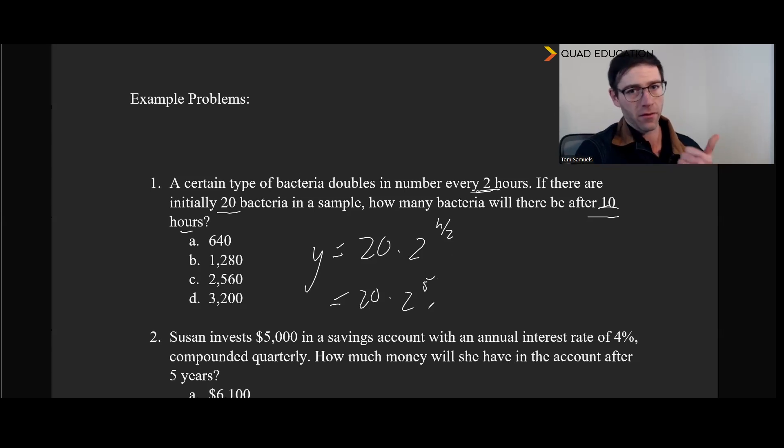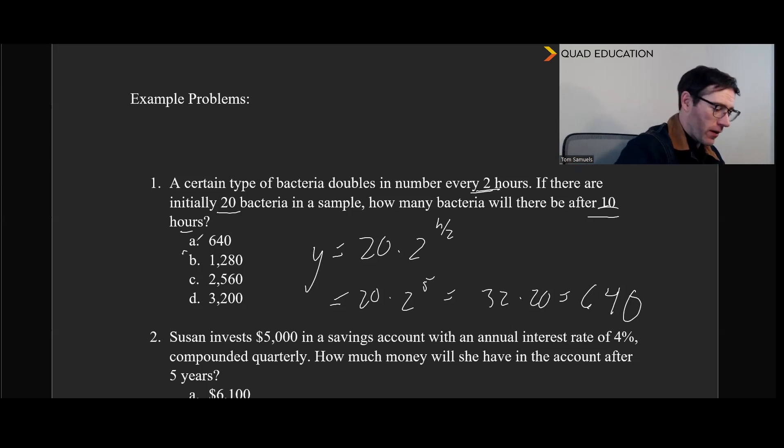That would be 20 times 2 to the 10 over 2, which is 5. And 2 to the 5 is 2, 4, 8, 16, 32. And so that's 32 times 20, which is 64 with a 0. And we see there that 640 is our answer. So pretty straightforward. All right, next question here. See what you can do with this one.